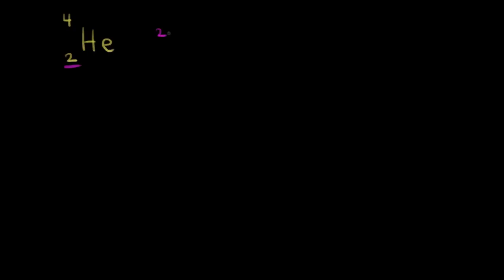Let's say we wanted to calculate the mass of a helium-4 nucleus. First we have to figure out what's in the nucleus. With an atomic number of two, we know there are two protons in the nucleus. And if we subtract the atomic number from the mass number, four minus two gives us two neutrons. So if we know the mass of a proton and the mass of a neutron, we could easily calculate the expected mass of a helium-4 nucleus.